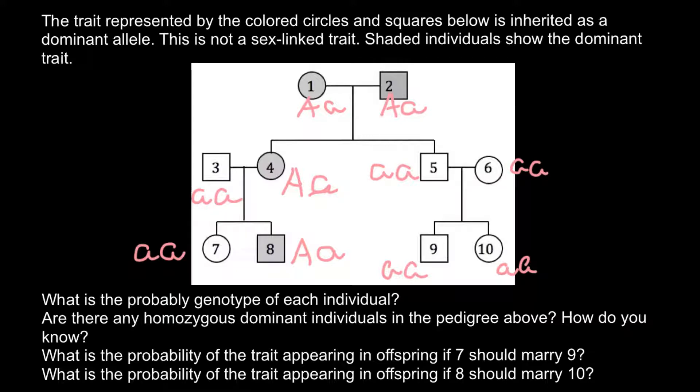Actually, as you see, we don't need any Punnett squares. Genotype of person number seven is small a, small a. Genotype of person number nine is small a, small a. So 100% of the progeny would be phenotypically normal.